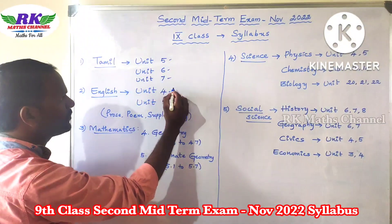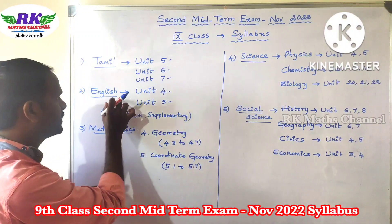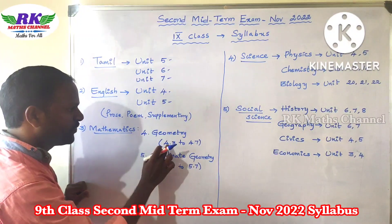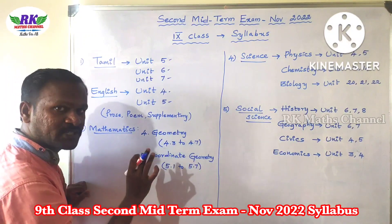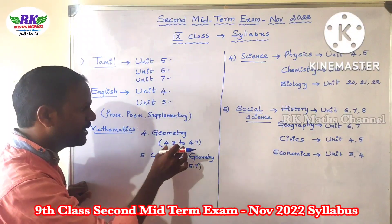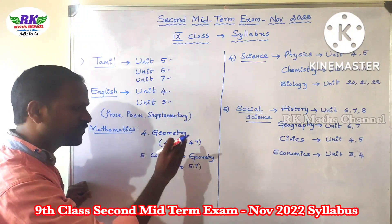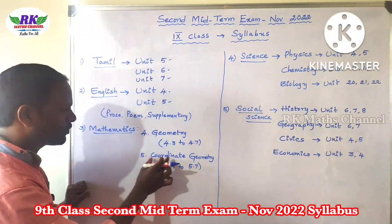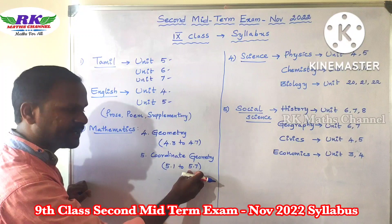And English — you will see unit 4 and unit 5. And for Maths, geometry exercises 4.3 to 4.7. The 4th chapter, coordinate geometry, full lesson. Then 5.1, 5.2, 5.7 — full lesson.